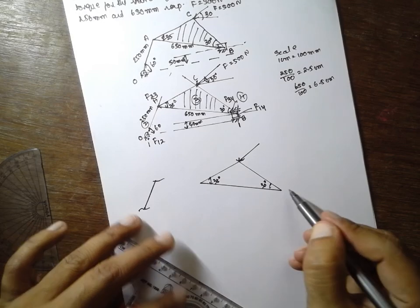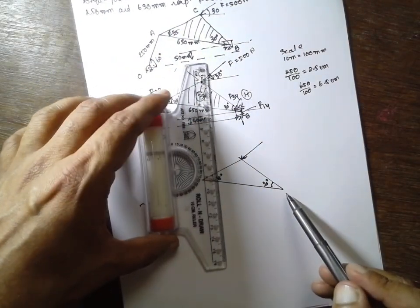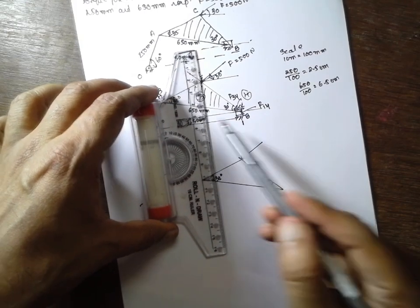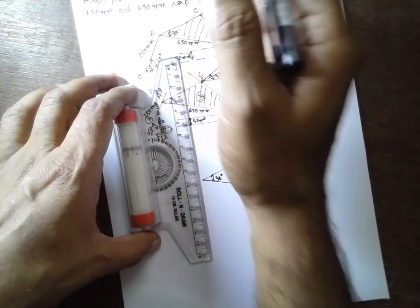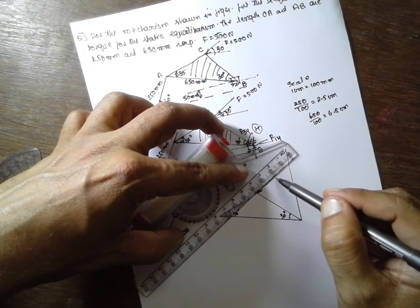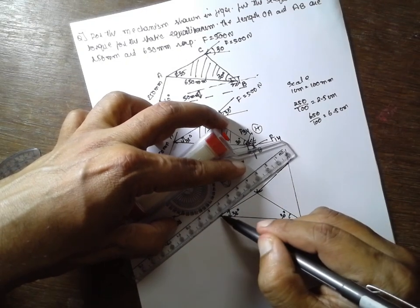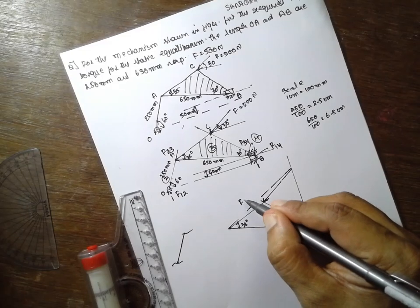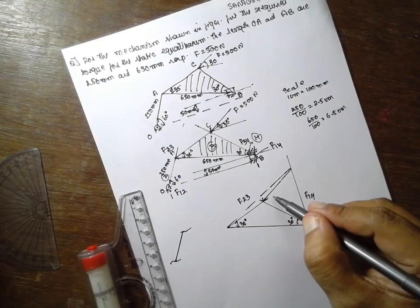As this is a piston, the line moves perpendicular to this line. Consider a perpendicular line. Extend this line and join this part. The limit of this link will be F23. The limit of this link will be F14. This is the force F equals 500 N.